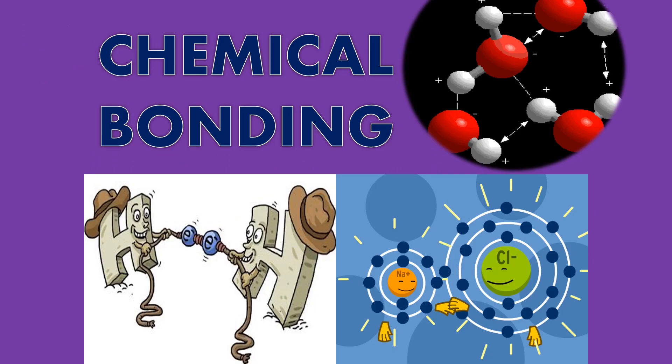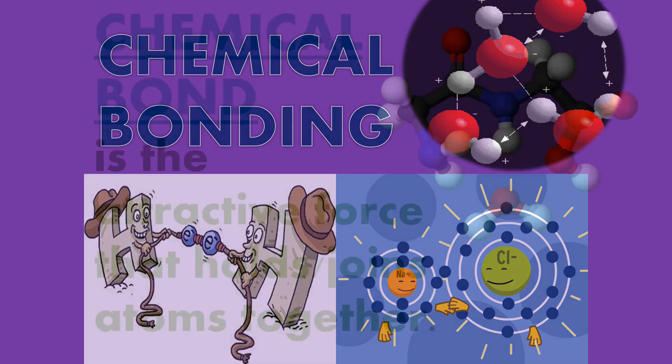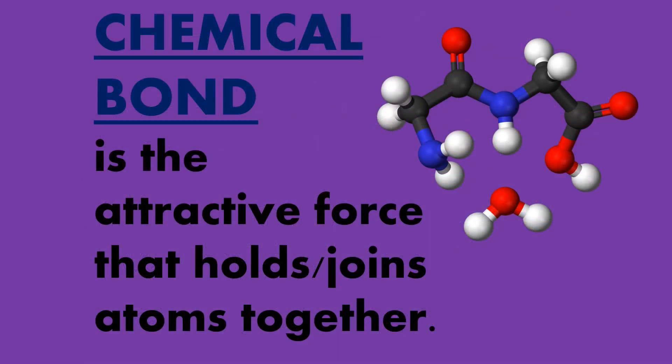To start this lesson, let's define chemical bonding. A chemical bond is a lasting attraction between atoms, ions, or molecules that enables the formation of chemical compounds. The bond may result from the electrostatic force of attraction between oppositely charged ions as in ionic bonds, or through the sharing of electrons as in covalent bonds.